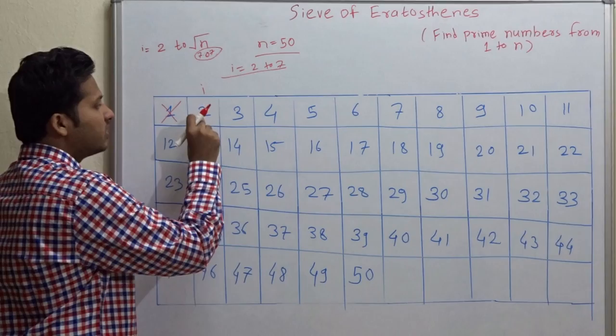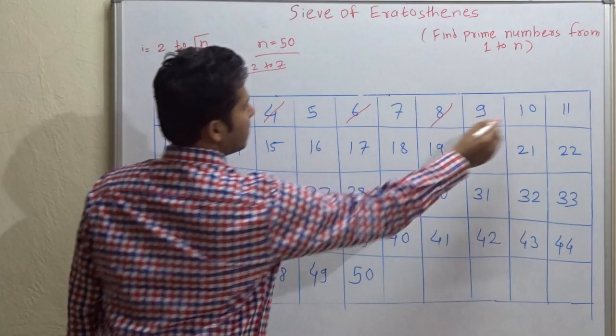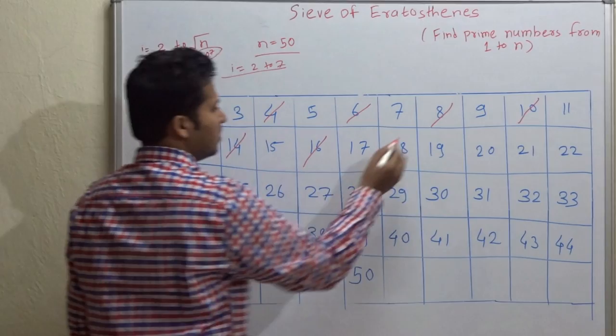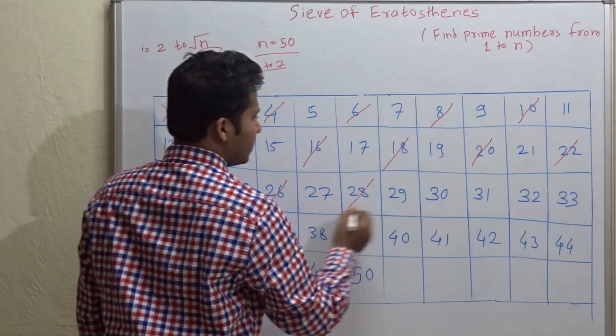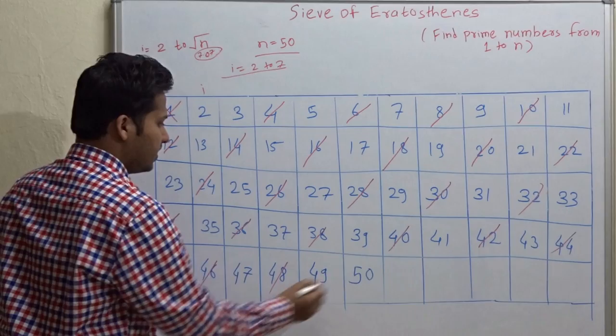Currently the number is 2, so we will cancel all the multiples of 2 except 2. Now 4, 6, 8, 10, 12, 14, 16, 18, 20, 22, 24, 26, 28, 30, 32, 34, 46, 48, and 50.